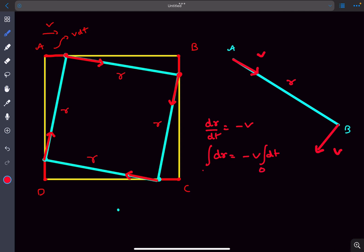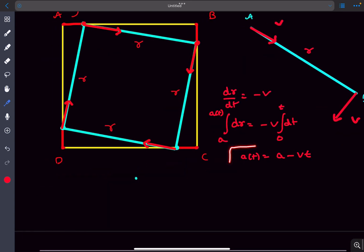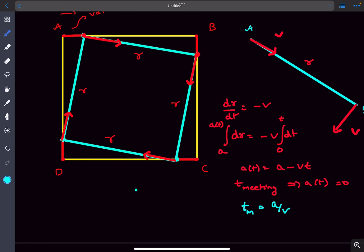At t equal to 0, the initial side length of the square was A. At any general time t, let's call it R. From here we'll get R as a function of time as A minus Vt. The side length of the square decreases linearly with time. Now we can easily find the area of the square as a function of time. We can also find the time of chasing from this equation. By symmetry, all these particles will meet at the center of the square. At the time of meeting, the side length would be simply 0, so the answer for the first question is A divided by V. The particles would meet after a time of A divided by V.